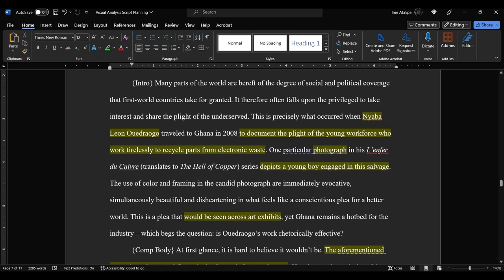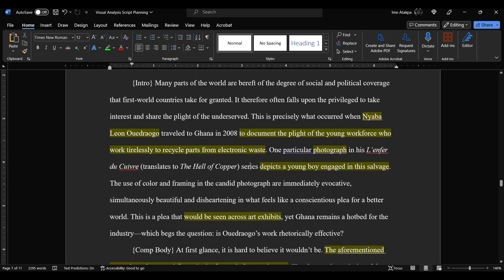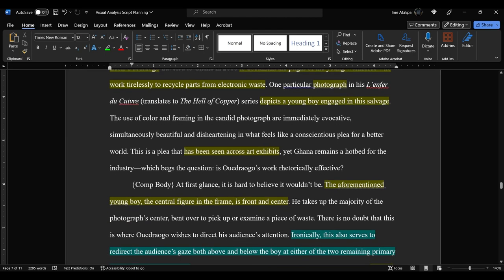So I have that element there as well. "This is a plea that would be seen across art exhibits." There's my circulation. And then my final question here is, which begs the question, is this work rhetorically effective, right? So that's what I'm trying to figure out because Ghana remains a hotbed for the industry of waste recycling. So how effective was this message if that's still the case? That's what I'm trying to decipher here.